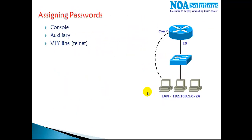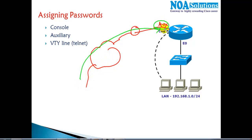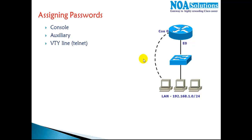There's another way to access the device — via the auxiliary port. I can connect my router to an auxiliary port, then to a modem, and then to a telecom line to access the device remotely. I want to ensure that if anyone tries to enter the router through the auxiliary port, that port is secured. There's also one more way of accessing devices — via Telnet.